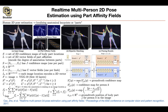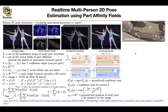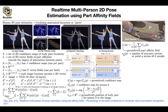For part confidence maps you take the maximum over overlapping people; for part affinity fields you do averaging. The denominator n_c(p) is the number of non-zero vectors at a particular point — many vectors will be zero since most people won't have a limb passing through that pixel, and you average only over those that actually contribute.